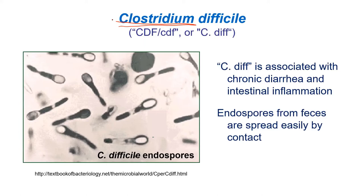C. diff is an intestinal organism associated with chronic diarrhea and inflammation. Some people have it naturally living in low levels in their intestine. Generally what happens is someone may have it at low levels, then they get sick with something else - say pneumonia - and take antibiotics. The antibiotics hopefully take care of the bacteria causing the pneumonia, but the endospores for C. diff don't die. C. diff is also naturally resistant to a lot of antibiotics. So when we take antibiotics for a different reason, suddenly C. diff has a chance to flourish, causing pretty nasty diarrhea.